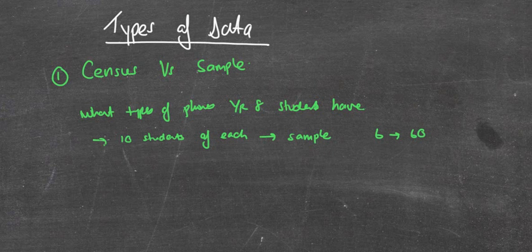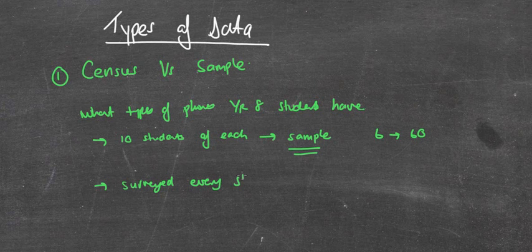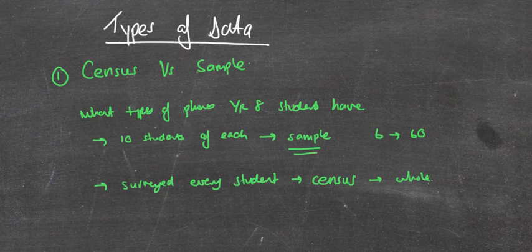But if we were to go around and survey every year 8 student, so every student, that is what we would call a census. It means that we look at the whole population. Again, a sample is where you take a small portion of the population.